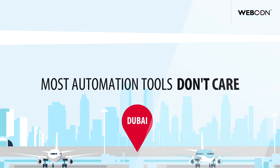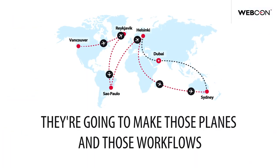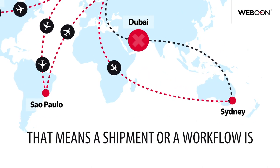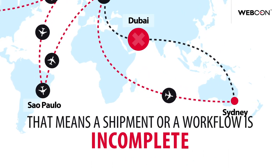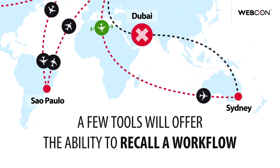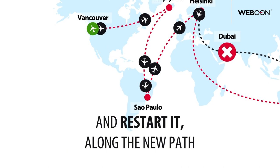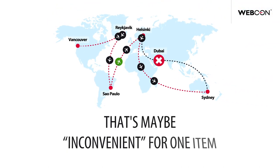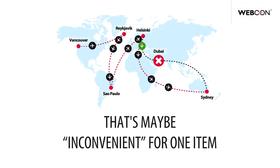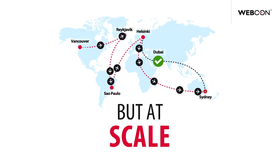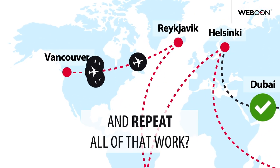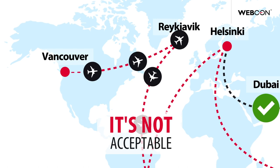Most automation tools don't care. They're going to make those planes and those workflows do what they were told to when they started. That means a shipment or workflow is incomplete. A few tools will offer the ability to recall a workflow and restart it along the new path — that's maybe inconvenient for one item, but at scale, do you want to recall all these flights and repeat all of that work? It's not acceptable.